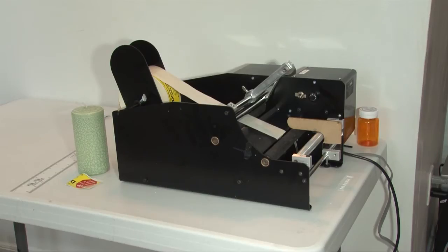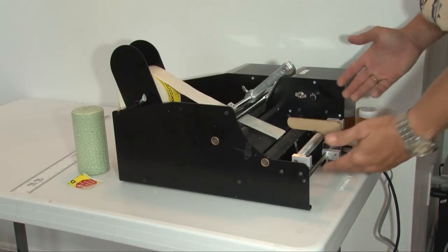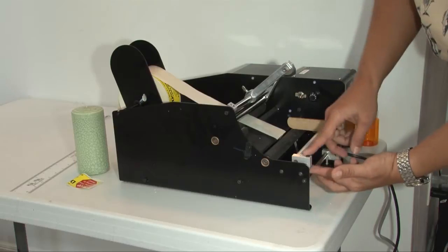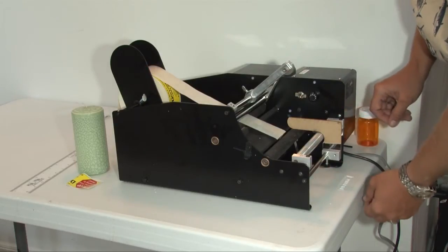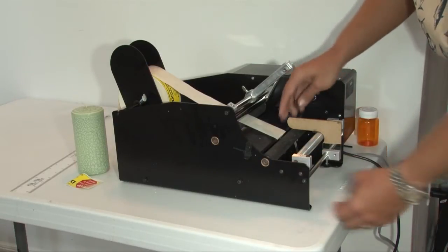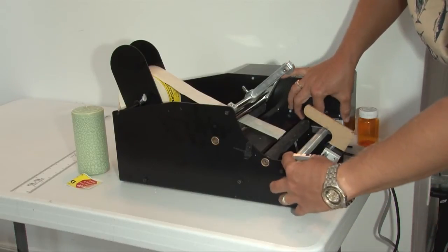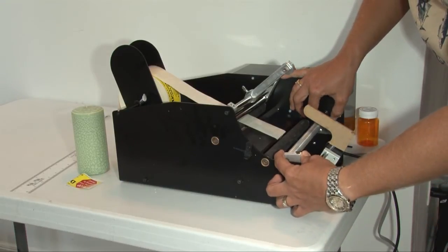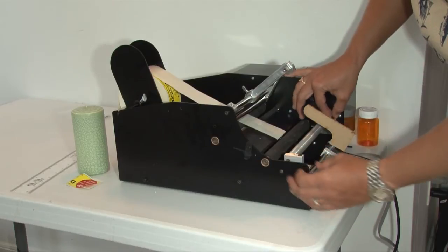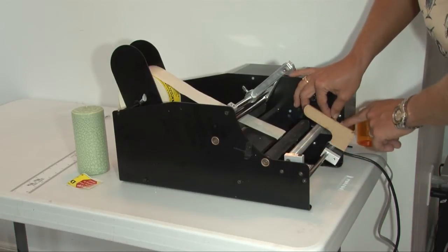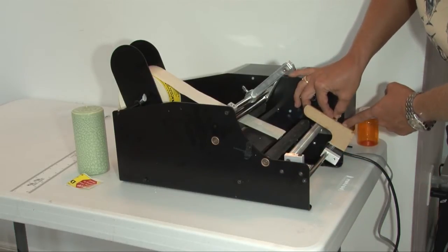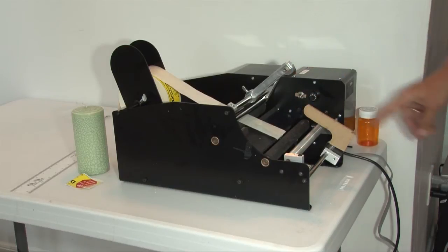Now we're going to demonstrate how to set your bottlematic up for different size containers. The first thing we're going to do is lift the back of the bottle roller blocks up in the air a little bit. Then we're going to slide it forward and lock the screws back into place, making sure that they're even on both sides if you have a straight container.